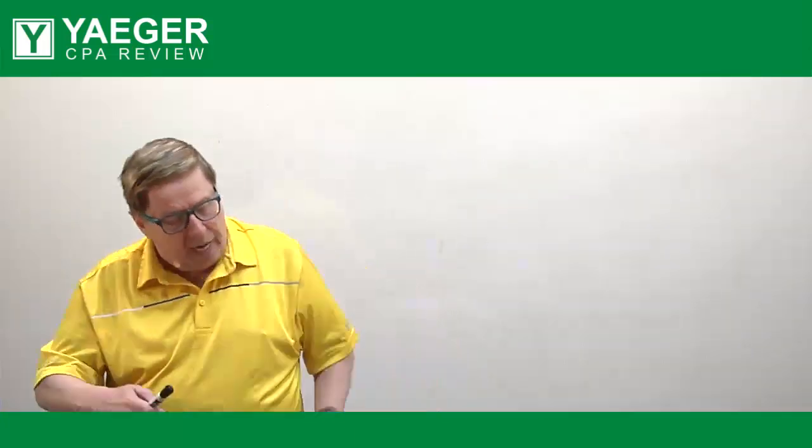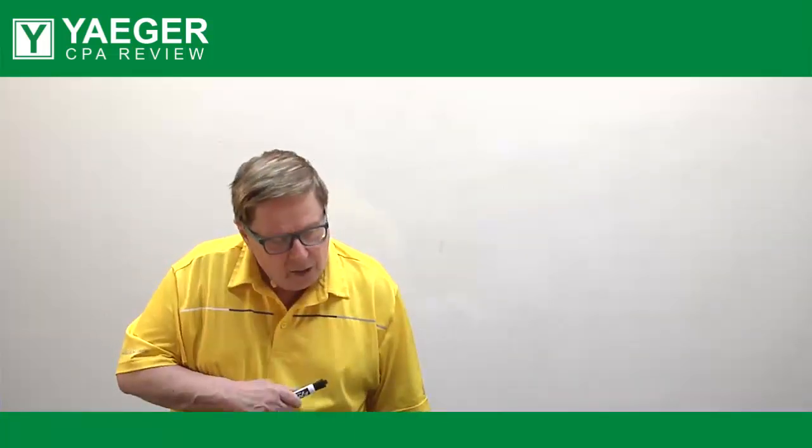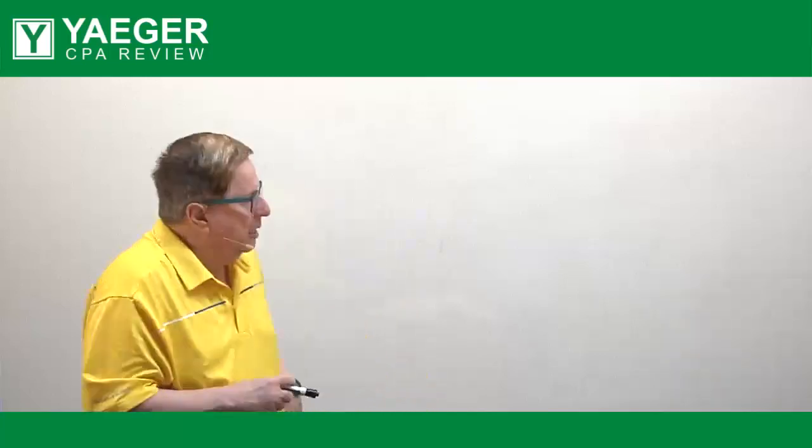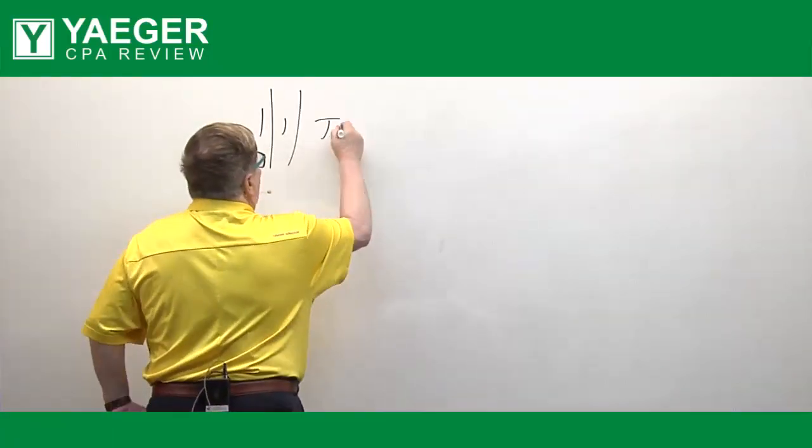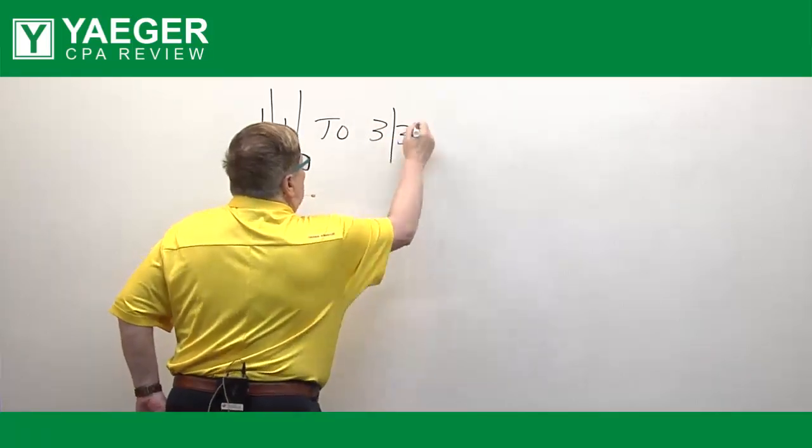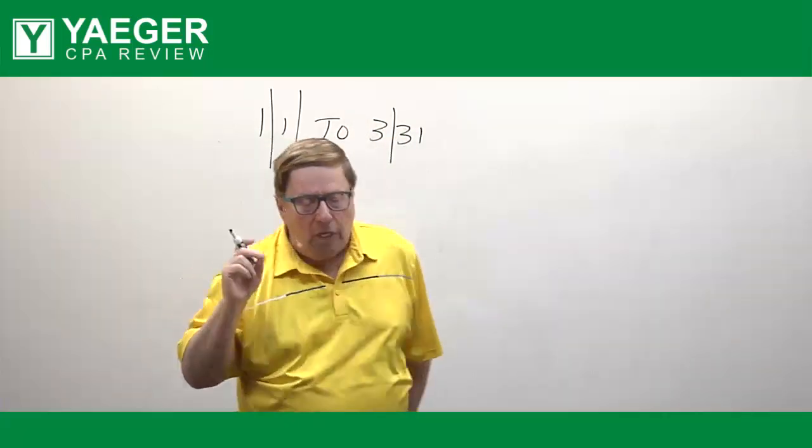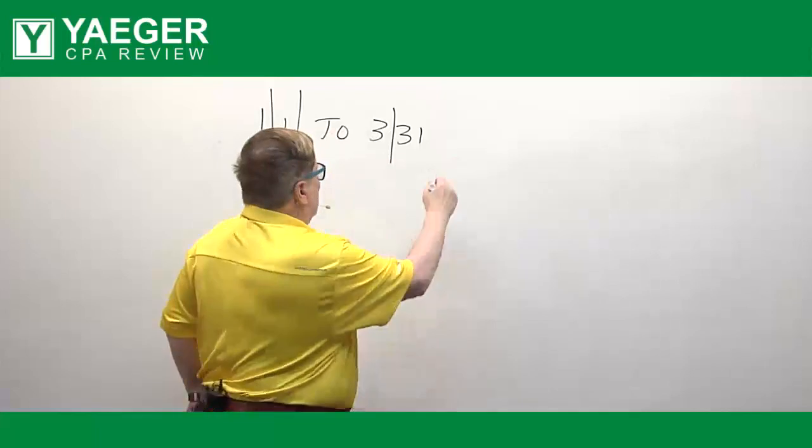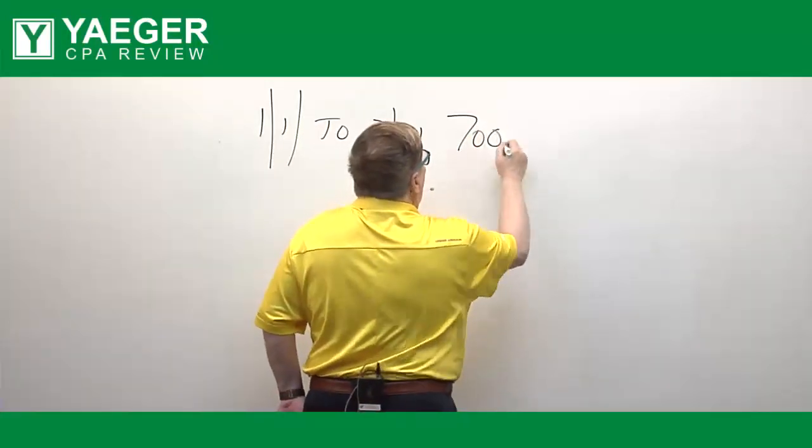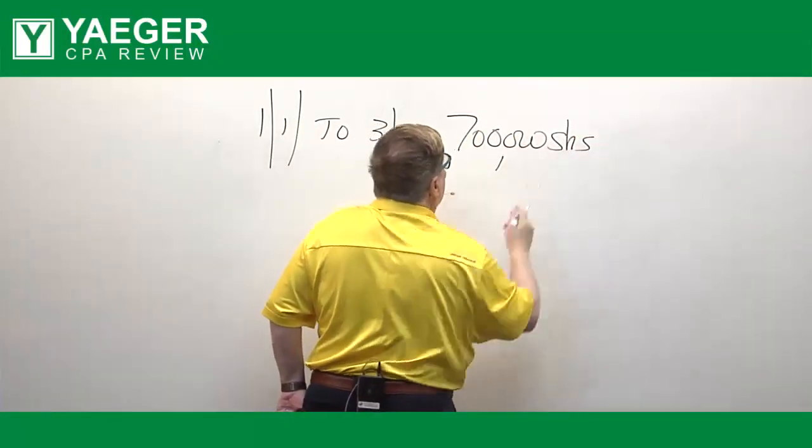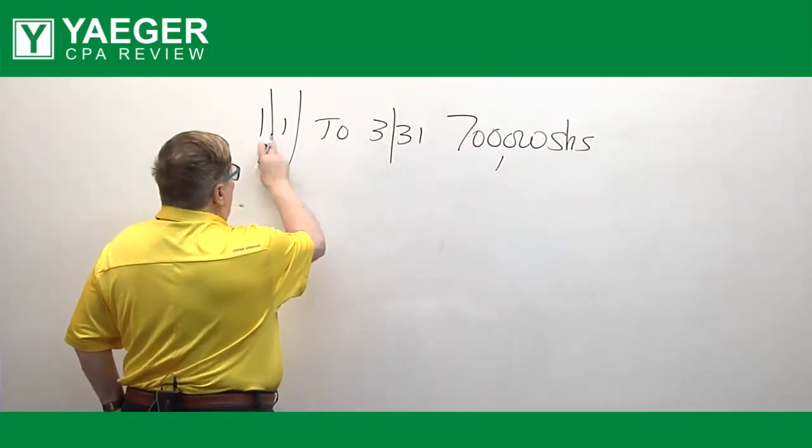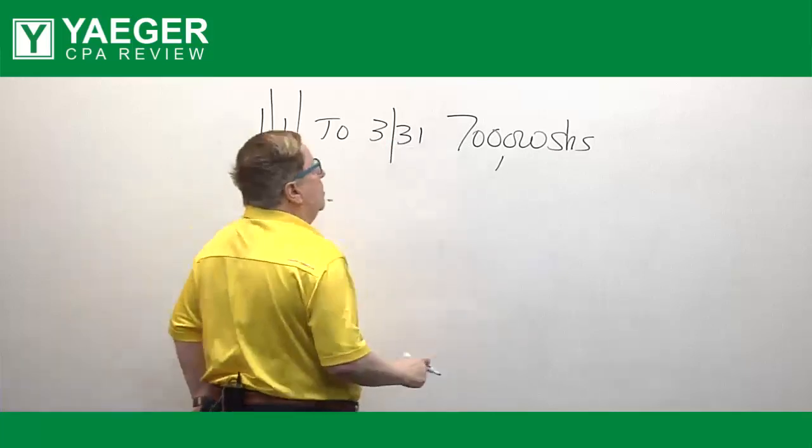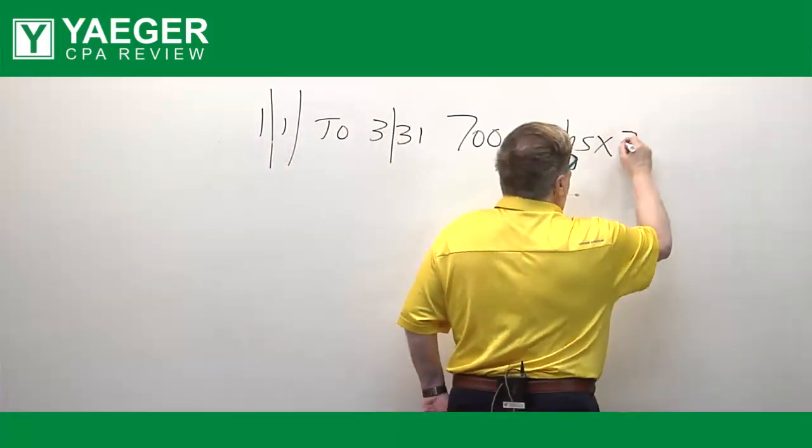Now how do you do this? Well first of all, from 1-1 to 3-31, we had a total of 700,000 shares. Now we had the 700,000 shares for how many months of the year? 3/12. January 1st to 3-31, we had it for 3/12 of the year.